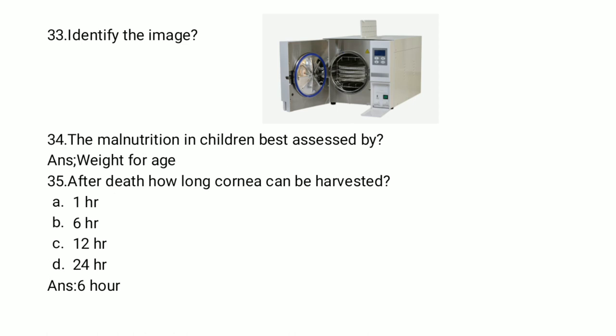How long can we harvest the cornea after death? The options are one hour, six hours, 12 hours, and 24 hours. The answer is six hours — it is a very important question. After death, the cornea can be harvested within six hours.